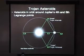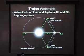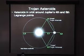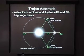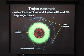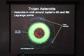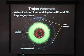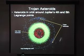Trojan asteroids orbit the sun farther out than the main belt asteroids. They orbit the fourth and fifth Lagrange points of Jupiter, which are points of gravitational stability. At these points, they orbit at the same rate as Jupiter, so they stay stationary relative to it. Here's a map of asteroids with known orbital parameters — here are the main belt asteroids, the near-Earth asteroids, and these two clumps are the Trojan asteroids.